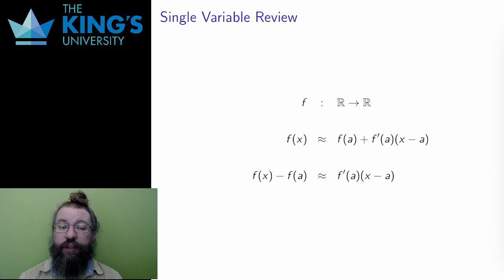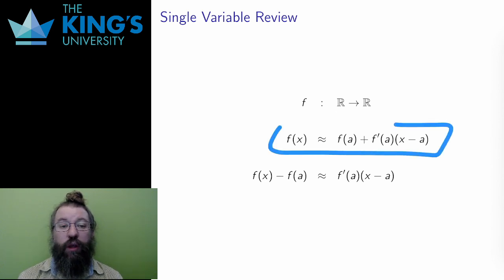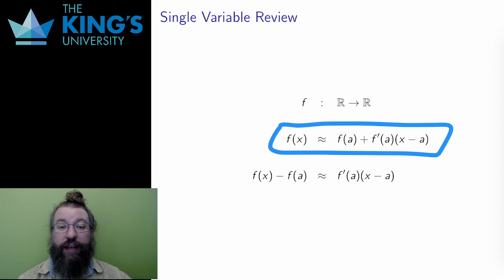If I have a single variable function f, I can take its linear approximation at a point a, f of a. f is approximately equal to f of a plus f prime of a times x minus a. The right side here is a linear equation, so its graph is a line. And this graph is just the tangent line, and the slope of the graph, f prime of a, is the derivative, as you would expect.